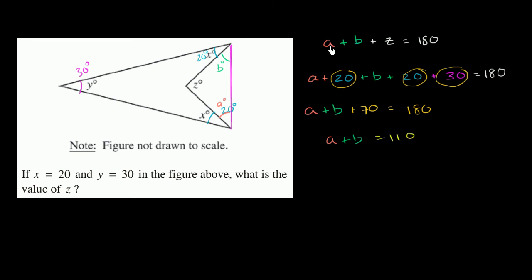Now we can substitute back up here. a plus b equals 110. So we have z plus 110 equals 180, or z equals 180 minus 110. I'm just subtracting 110 from both sides of this equation. And we get z equals 70.